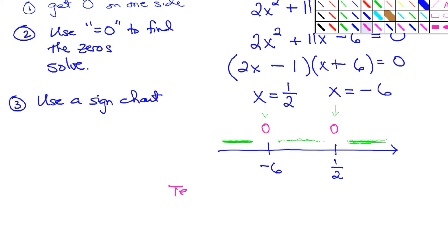We're going to pick test values that are in each of these intervals. The first interval is from negative infinity to -6. I choose -8, but you can choose any number you want. Between -6 and 1/2, I choose 0. And between 1/2 and infinity, I choose 1.